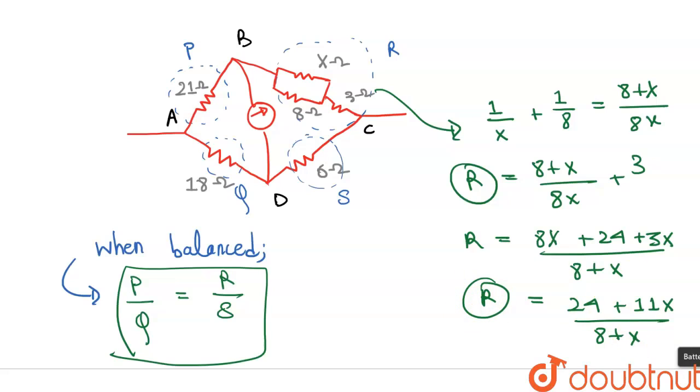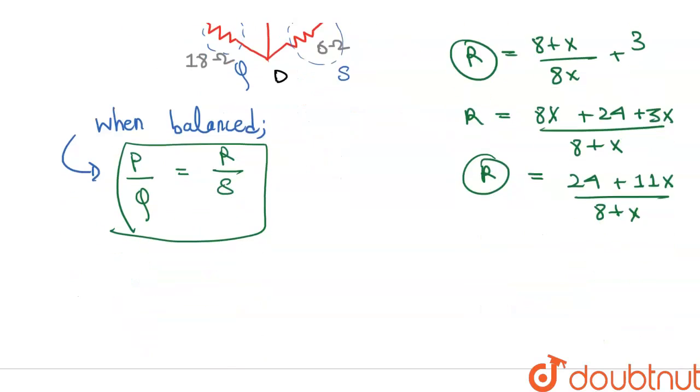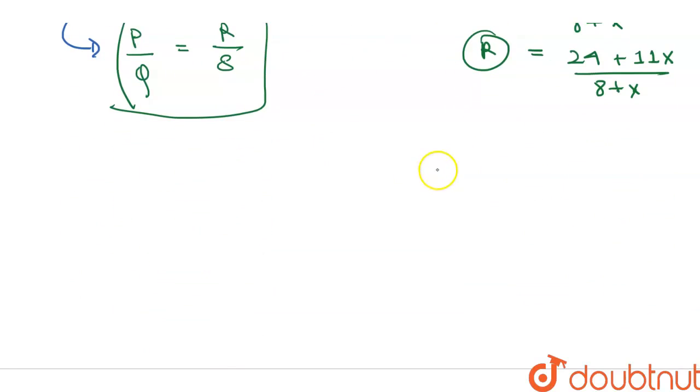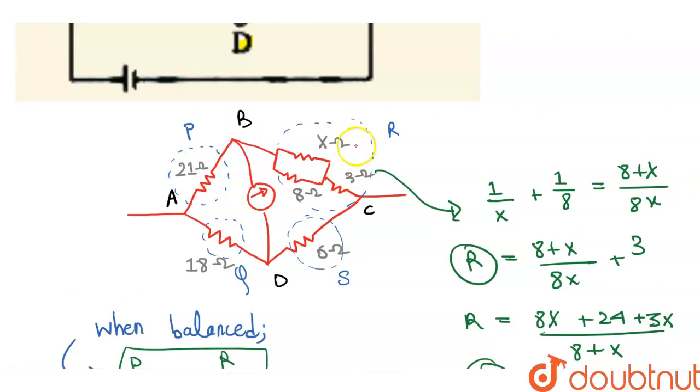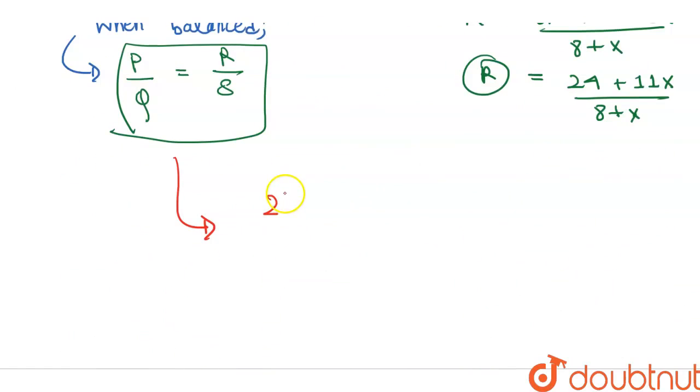So we will be using this value. Now we will put all the values in this equation. So this is 21, this is 18, this is R equivalent that we just found and this is 6. So 21 over 18 is equals to 24 plus 11X over 8 plus X over 6.